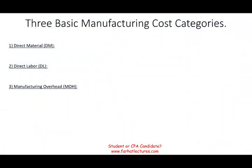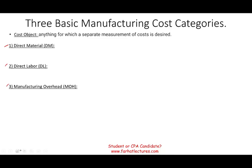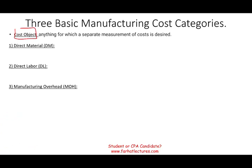Let's go ahead and talk about the three basic manufacturing cost categories: direct material, direct labor, and manufacturing overhead. The question is, why do we need those three items? Well, the reason we need them is to cost something called a cost object. A cost object is anything for which a separate measurement of cost is desired — in other words, you are looking to accumulate and assign cost to a particular item.